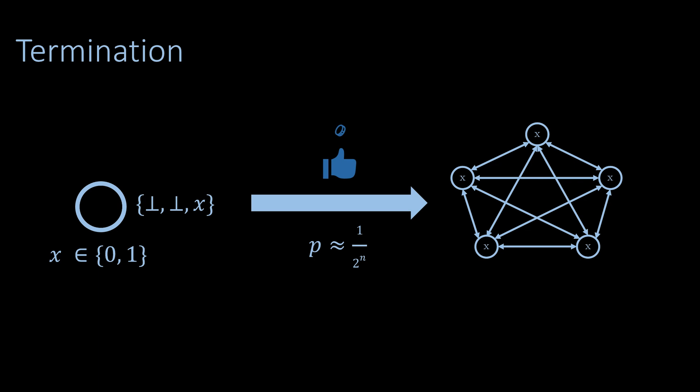Since this is true in every round, the algorithm is expected to terminate in on the order of 2 to the power of n rounds. Obviously that's a lot of rounds for large networks, but our goal was just to show that the consensus problem can be solved using randomization — so the problem is solvable in the asynchronous model with fewer than half of the nodes potentially crashing.